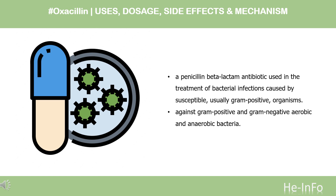Pharmacodynamics. Oxacillin is a penicillin beta-lactam antibiotic used in the treatment of bacterial infections caused by susceptible, usually gram-positive, organisms. Oxacillin has in vitro activity against gram-positive and gram-negative aerobic and anaerobic bacteria. The bactericidal activity of oxacillin results from the inhibition of cell wall synthesis and is mediated through oxacillin binding to penicillin-binding proteins (PBPs). Oxacillin is stable against hydrolysis by a variety of beta-lactamases, including penicillinases, cephalosporinases, and extended-spectrum beta-lactamases.